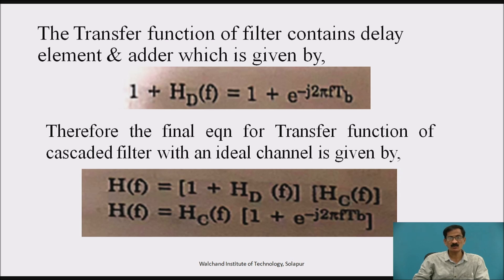Therefore, the final equation for transfer function of cascaded filter with an ideal channel is given by h of f equals 1 plus hd of f into hc of f. So h of f equals hc of f into 1 plus e raised to minus j 2 pi f tb.